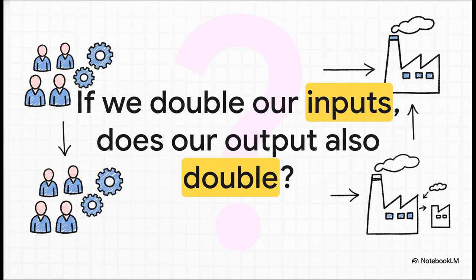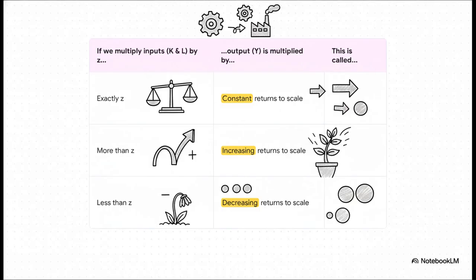So let's ask a really simple question to get our heads around this. If we take our whole economy and we double everything, we double our labor, we double our capital, do we get exactly double the output or does something else happen? Turns out there are really only three ways this can go. Look at that first row. If you double your inputs and your output exactly doubles, that's what we call constant returns to scale. Makes sense, right?